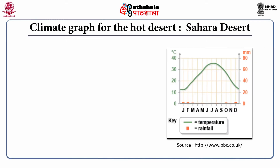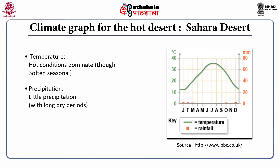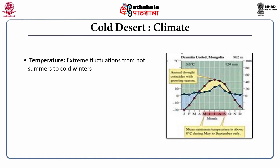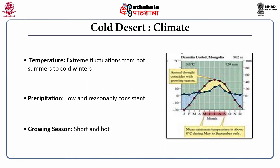One remarkable plant is Welwitschia mirabilis — a shrub-like plant with only two leaves seen above ground that can live for over 1000 years. The climate graph for the hot Sahara desert shows hot conditions dominating, with very little precipitation and long dry periods — all hot deserts are characterized by prolonged extreme soil drought. Cold desert climate features extreme fluctuation from hot summers to cold winters, with low and reasonably consistent precipitation and a short, hot growing season.